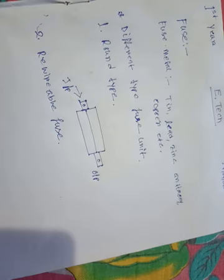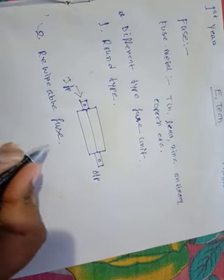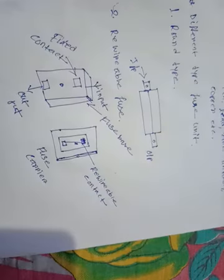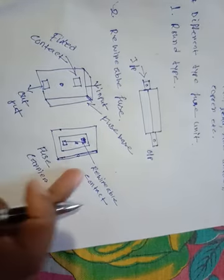The other part is a porcelain fuse carrier which carries the fuse element. This is called the rewireable fuse or kitkat fuse. It has two parts: a base and a fuse carrier. The base is attached to the board or wall, and the fuse carrier carries the fuse element. The fuse carrier part is a removable part.